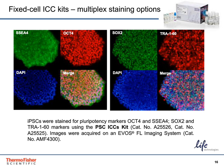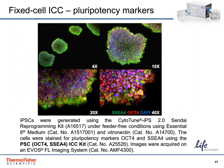This slide shows another example of the presence of pluripotency markers using the fixed cell ICC kit. Induced pluripotent stem cells were created using CytoTune version 2 Sendai reprogramming kit under feeder-free conditions with Essential 8 medium and vitronectin as a substrate. The cells were stained for pluripotency markers OCT-4 and SSEA-4 using the PSC ICC kit. All images were acquired using EVOS FL microscope. You can see that the colonies are positive for SSEA-4 and OCT-4 as well as DAPI in each of the panels at 4X, 10X, 20X, and 40X magnifications.